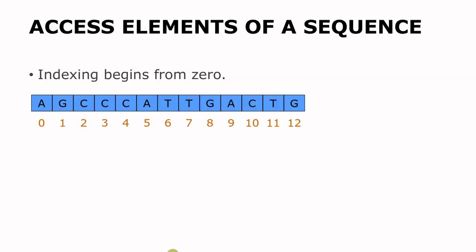You should also note that indexing in Python begins from zero. And so if you have a sequence, which will usually be in this format, then the first nucleotide is going to have an index of zero, the second nucleotide will have an index of one, and in that order up to the end of the sequence. So if let's say we have a sequence with a length of 100, then the maximum index that can be given is 99, and that will be for the last nucleotide.